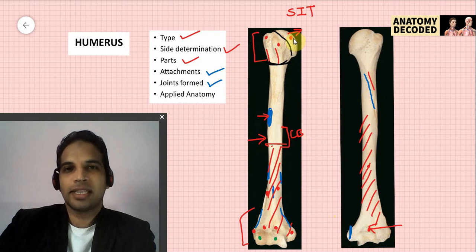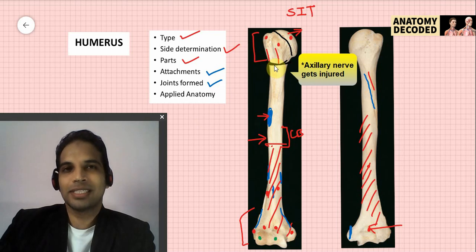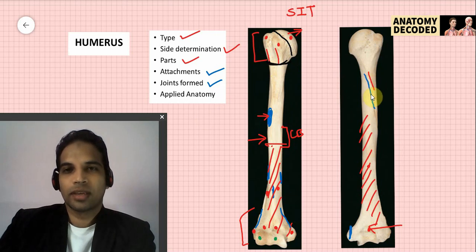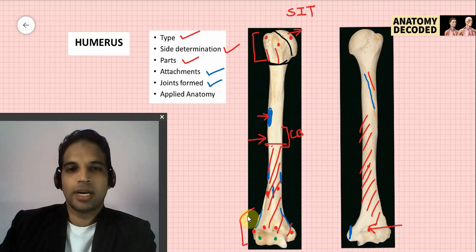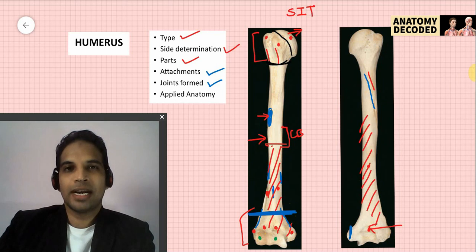Joints formed by the humerus: the head forms the shoulder joint; the lower end forms the elbow joint. Applied anatomy: fracture of the surgical neck may paralyze the axillary nerve, affecting deltoid and teres minor. Fracture in the radial groove injures the radial nerve, causing wrist drop. A supracondylar fracture of the humerus puts the brachial artery and median nerve at risk, leading to Volkmann's ischemic contracture.